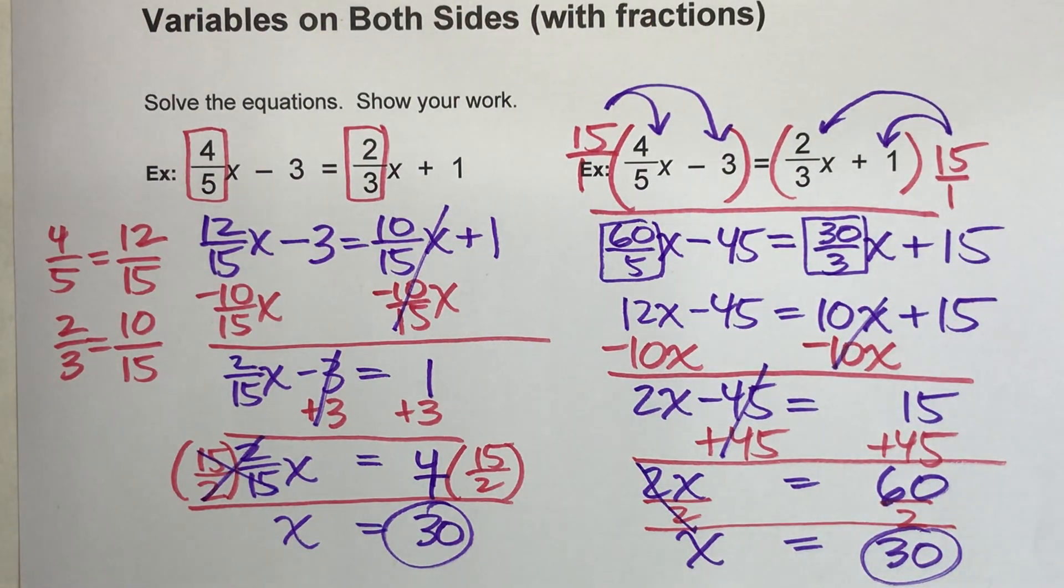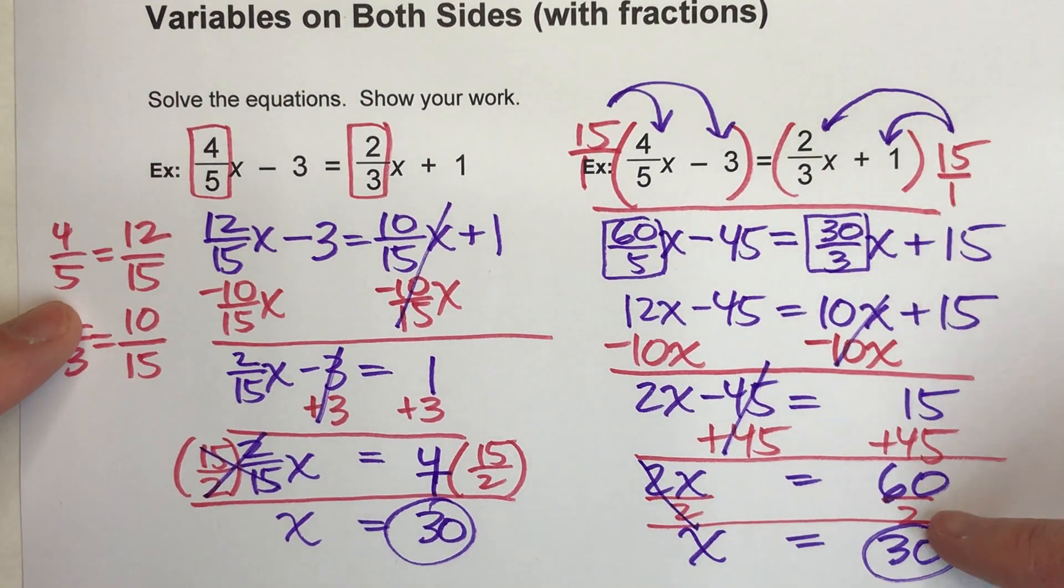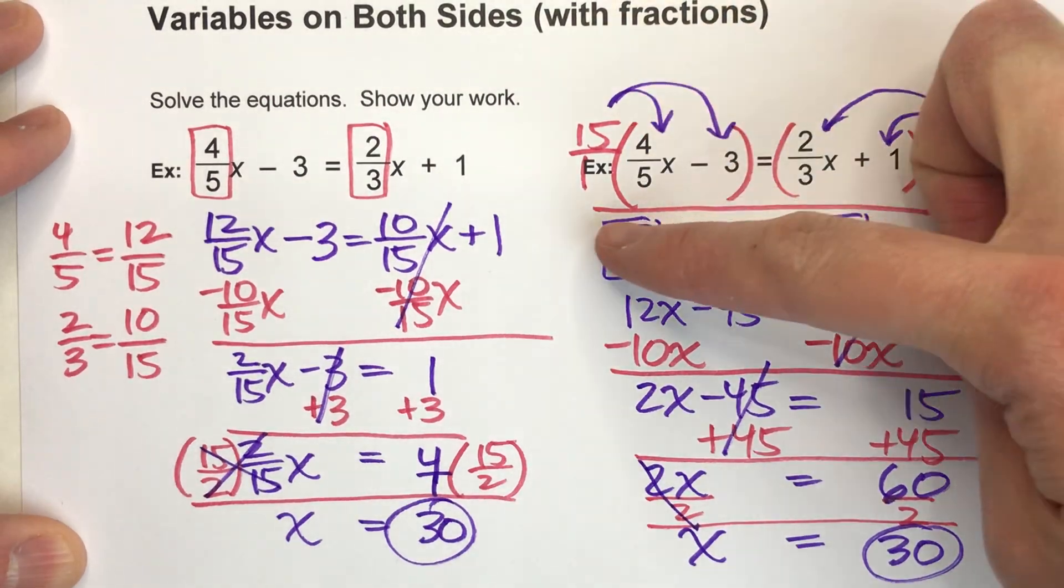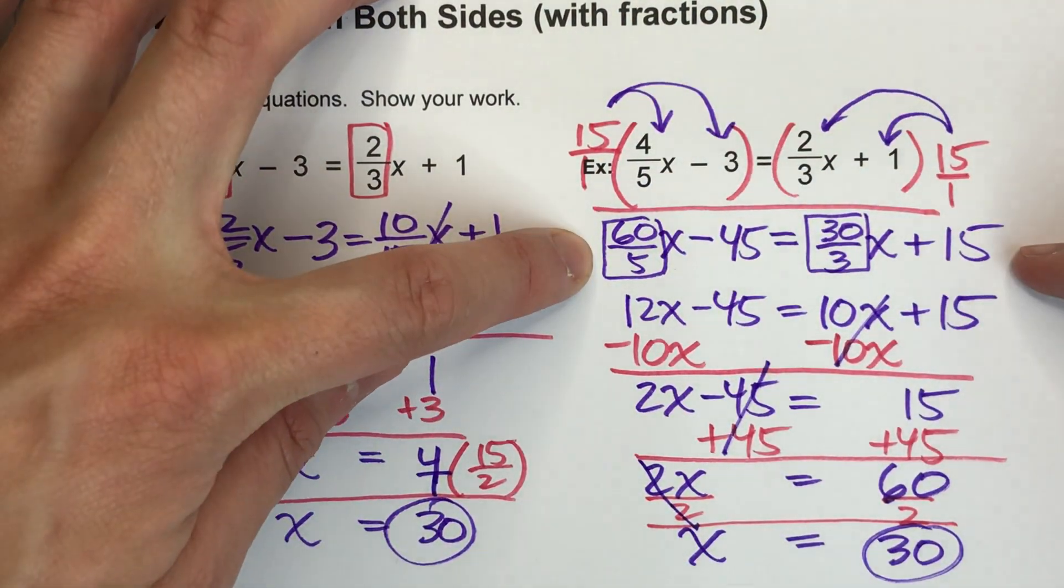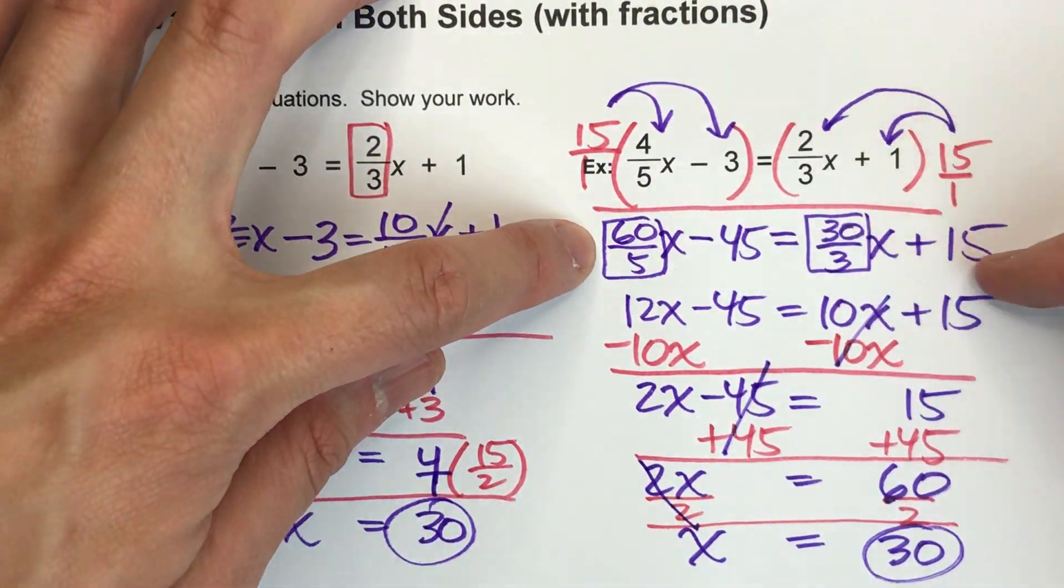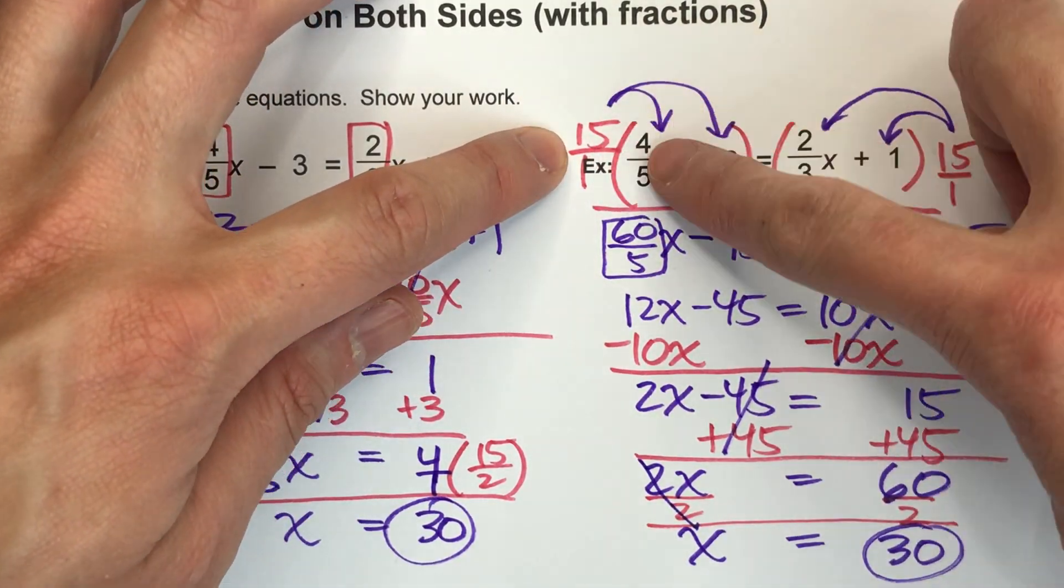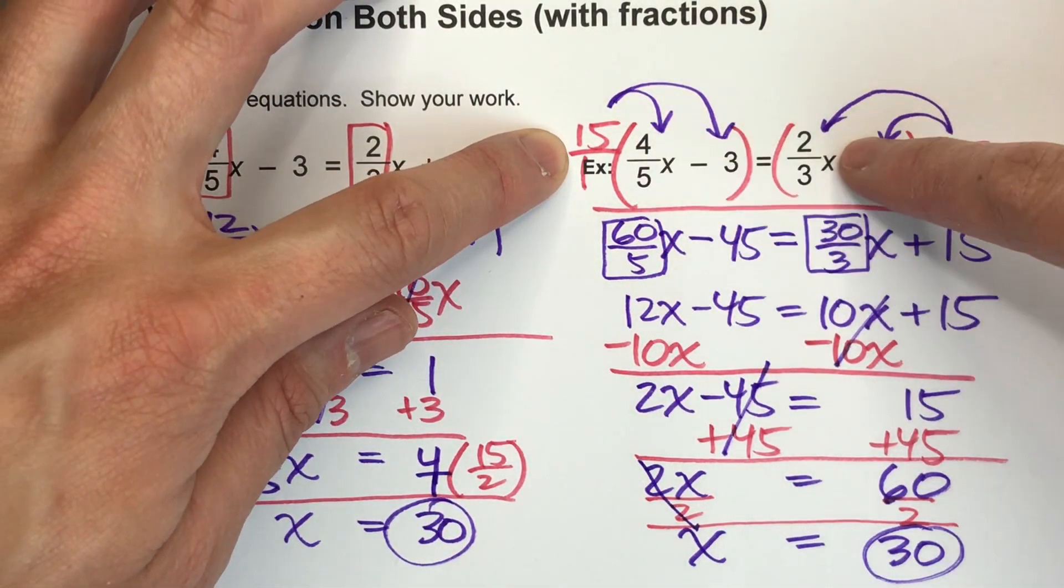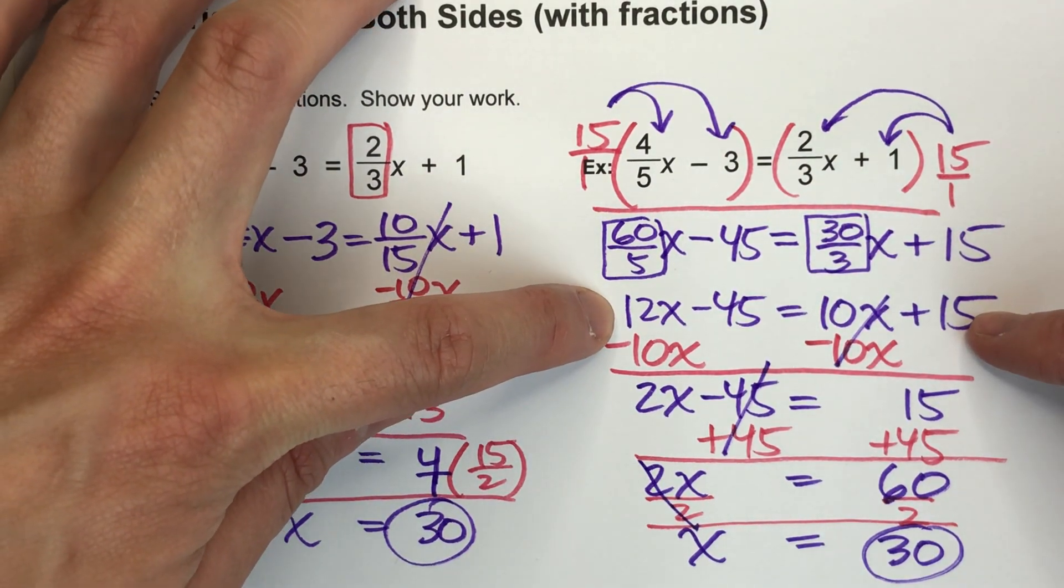So there you go. Got the exact same answer because it was the exact same equation. But I just used a different method. And it might look like this one takes more steps. But really, a lot of people can do this first step in their head by just multiplying it or using a calculator. Because every time you multiply this side by the common denominator, those fractions will automatically become whole numbers.